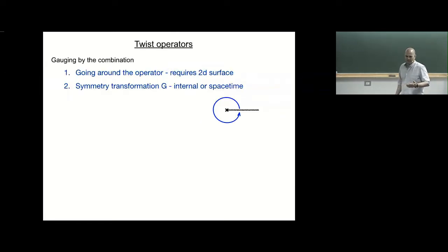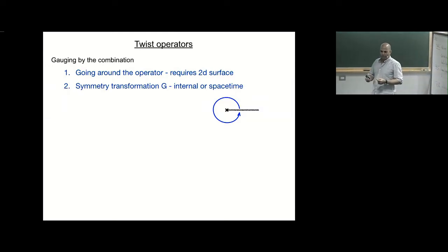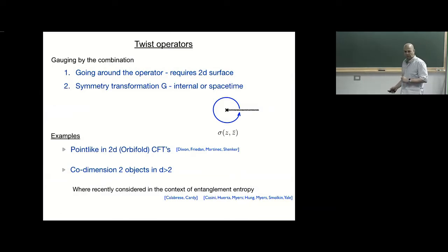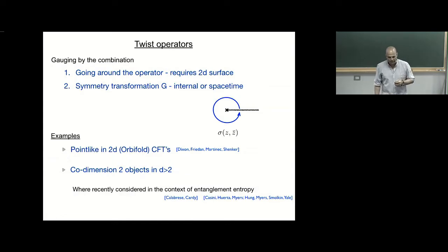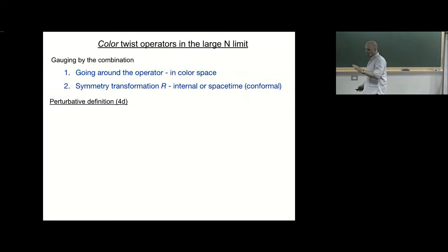So what is a twist operator? A twist operator is an operator that when you go around, you have to apply — it's like an orbifold — you have to apply some symmetry transformation. Because going around requires defining a two-plane, it's a co-dimension two operator. The symmetry transformation can be either internal symmetry or space-time symmetry. These are most familiar starting from orbifolds in 2D CFT where you have the twist operator in the target space. They were recently useful for entanglement entropy, where this symmetry can be a physical rotation or internal symmetry if you work in the replica theory.